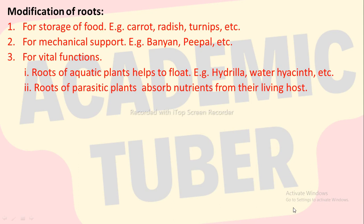Roots of aquatic plants help to float, for example hydrilla, water hyacinth, etc. Roots of parasitic plants absorb nutrients from their living host.